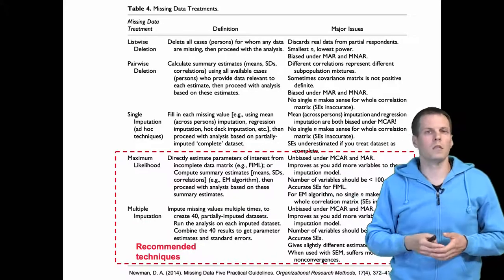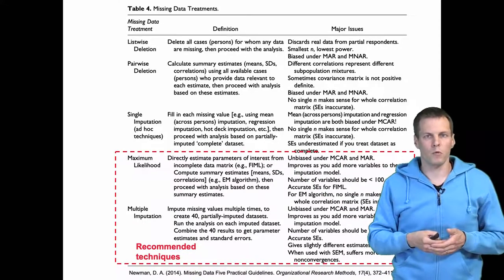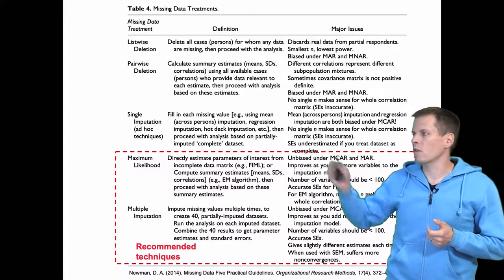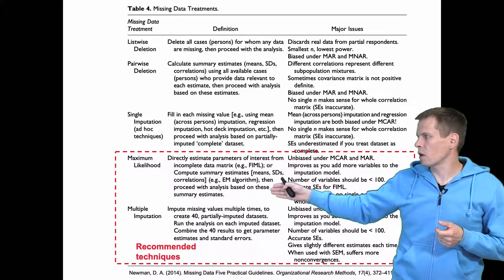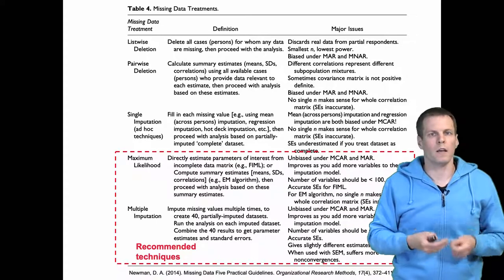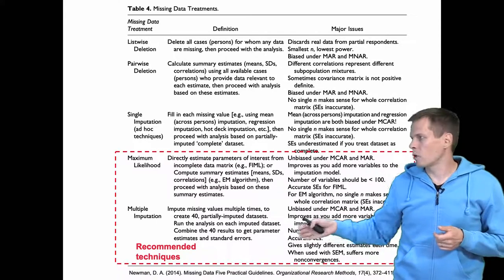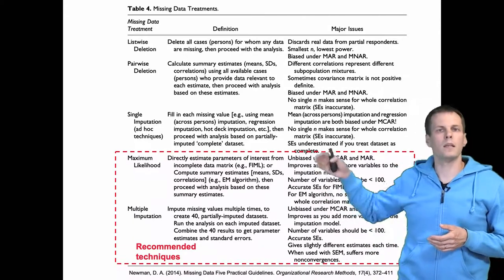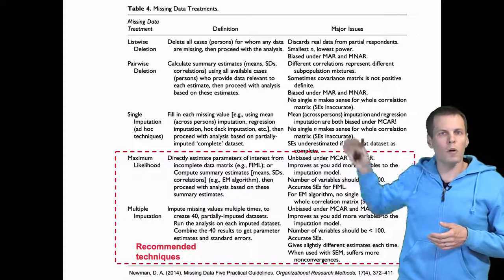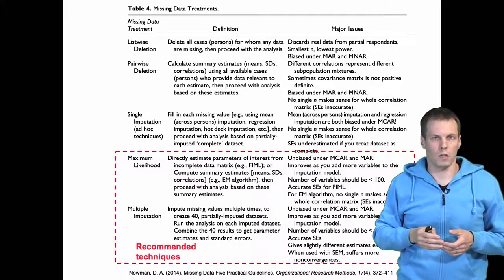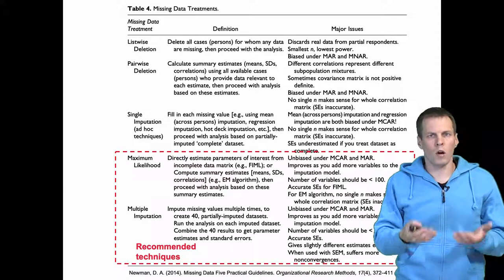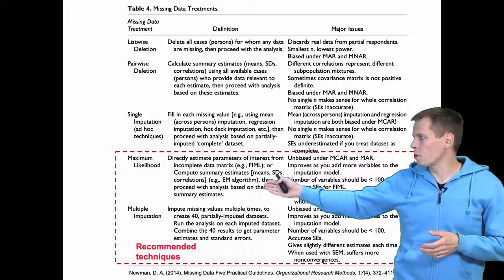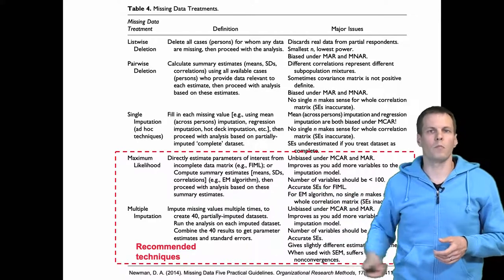Single imputation techniques — mean substitution being the most common — also include regression-based imputation techniques. Then we have the modern techniques: maximum likelihood for missing data, FIML, and multiple imputation techniques. These are the techniques Newman recommends, and he lists in brief form all the major issues with the other techniques. So, all other things being equal, if we don't know anything about the problem, we should always go for FIML or multiple imputation.